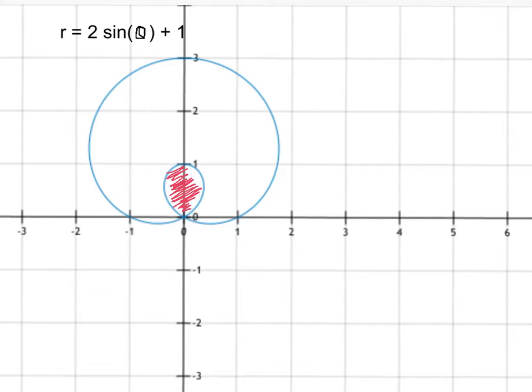If you recall, the area for a polar coordinate is one-half the integral of r squared d theta. The key to this whole thing is the d theta, because it tells us that our bounds have to be angles.